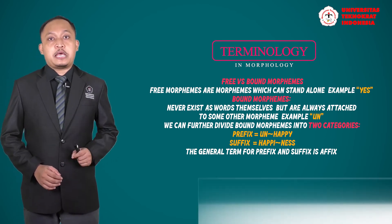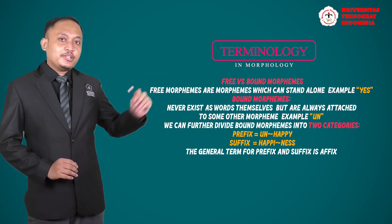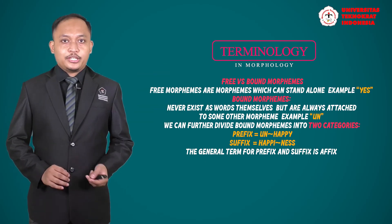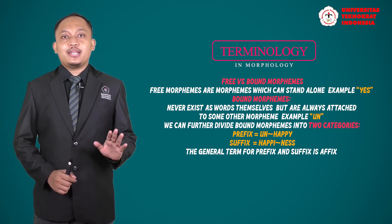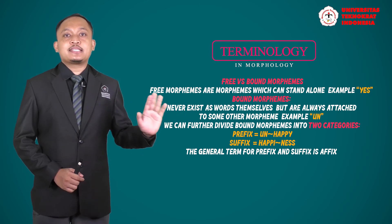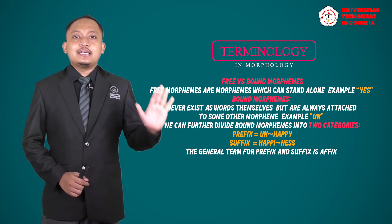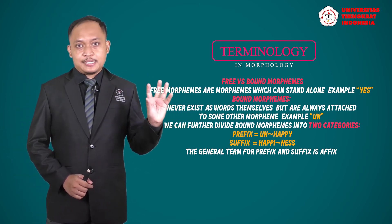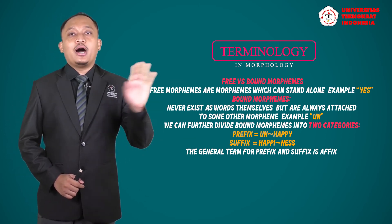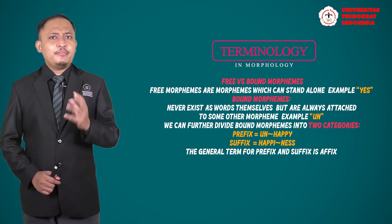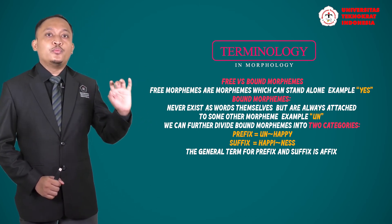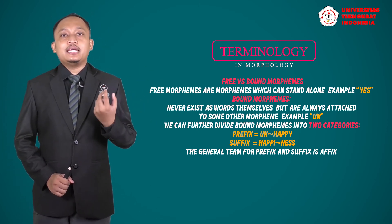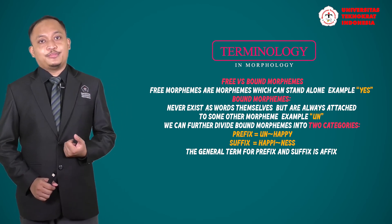For example, the word 'unkind' has two morphemes: 'un' and 'kind.' 'Kind' is a free morpheme because it can stand alone and has meaning. Meanwhile, 'un' does not have meaning until it is attached to a word, so 'un' in this context is called a bound morpheme.